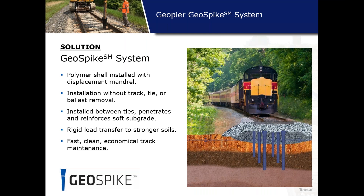The GeoPeer GeoSpike system has definite benefits compared to other alternatives — primarily that it can be installed without track tie or ballast removal and without massive earthwork or disruption of the existing rail line. These are polymer shells installed with a displacement mandrel between the ties, designed to penetrate through soft poor-performing soils and tag into lower, stronger subgrades, representing a rigid load transfer to stronger materials.